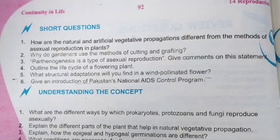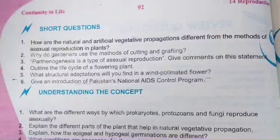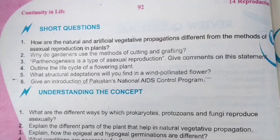The third statement is: parthenogenesis is a type of asexual reproduction — give comments on this statement. Parthenogenesis is an asexual reproduction method which is performed in animals without fertilization. The detail discussion is on page number 74.